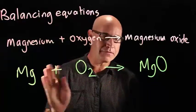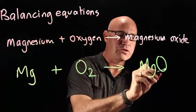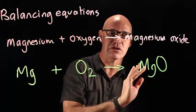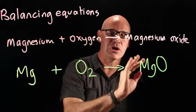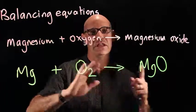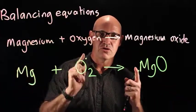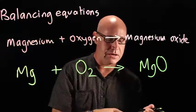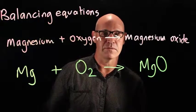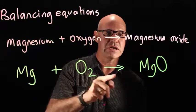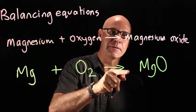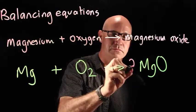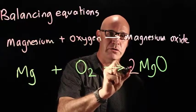We need to make the number of oxygens the same on both sides. There's only one thing we can do — we cannot ever put a subscript two here, because if we did that we would be changing the molecular formula and it would no longer be magnesium oxide. The only thing you can do is put a number in the front, and that's what we call a coefficient.